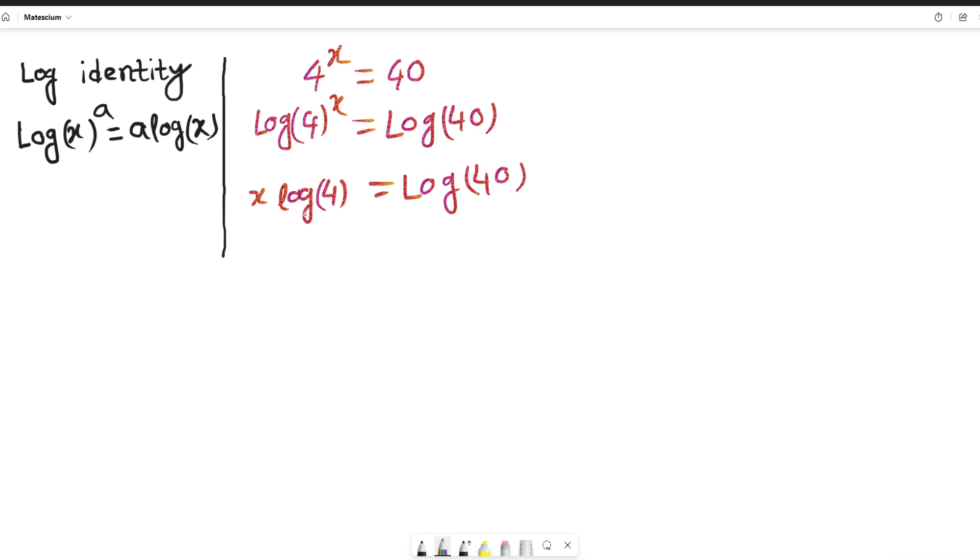Interesting thing: look here, on the left-hand side there is an x and on the right-hand side there is no x. That means if you somehow get rid of this log 4 from the left-hand side, this x will be totally free. That is our destination.